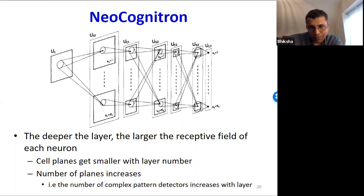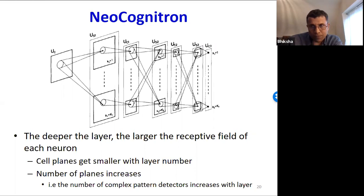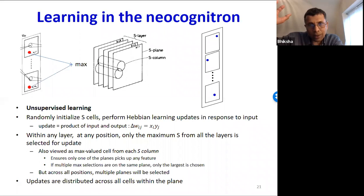In Fukushima's model, the model used unsupervised learning. You provide the network with input and there is no target output — no label. The network uses an update rule to update its parameters. The S-cell parameters for each plane are randomly initialized and they learn through Hebbian learning. The C cells don't learn. What was the Hebbian learning rule? Neurons that fire together, wire together — mathematically, the weight of a connection is updated by the product of the input and the output.